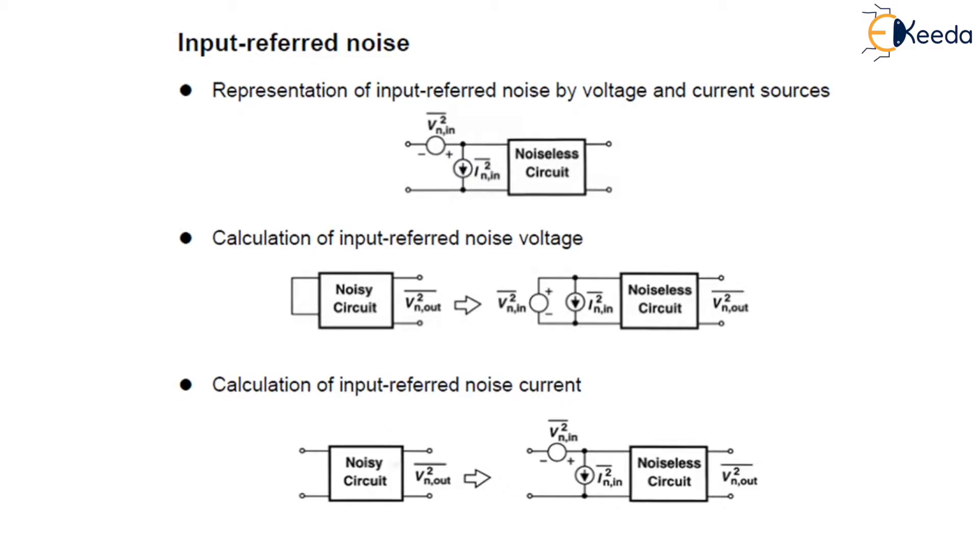If the output impedance of the preceding stage assumes a larger value, thus reducing the effect of this input noise voltage, the noise current still flows through a finite impedance, producing noise at the input.